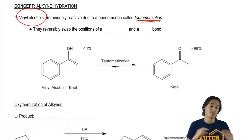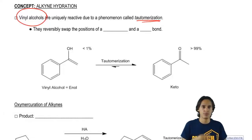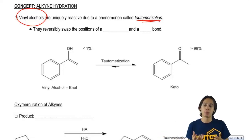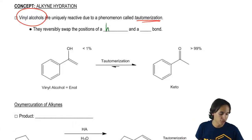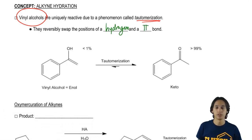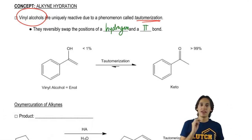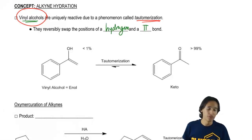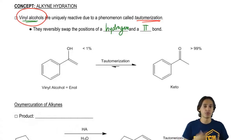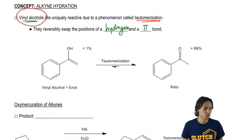Basically, to summarize it — I'm not going to teach you the full mechanism because that would be a whole separate lesson — all you really need to know is that tautomerization is going to reversibly swap the position of a hydrogen and a pi bond. Any time that you make a vinyl alcohol, this is something special. This is not a regular alcohol. This is an alcohol that is now subject to a phenomenon called tautomerization.